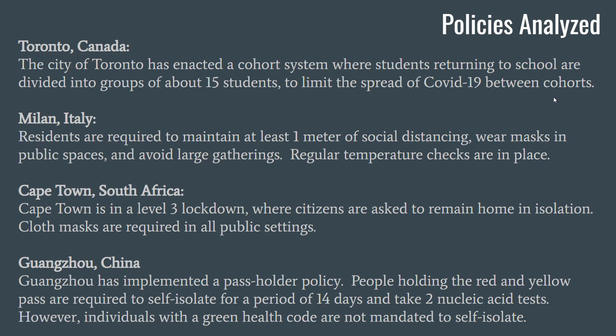The City of Toronto has enacted a cohort system where students returning to school are divided into groups of about 15 students. This is because if a student within a group gets infected, they will not be able to spread it beyond their cohort because the cohort will go into quarantine, thus limiting the spread of COVID-19 among cohorts.